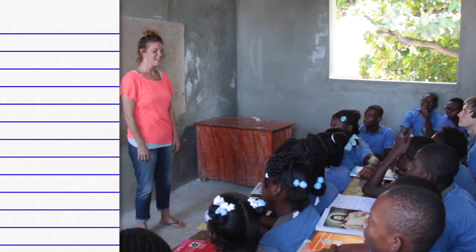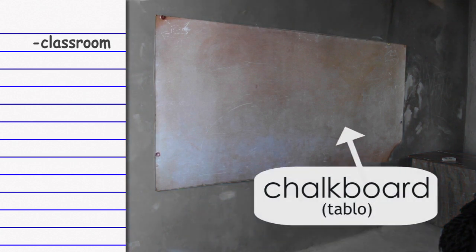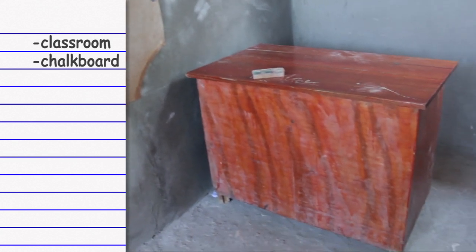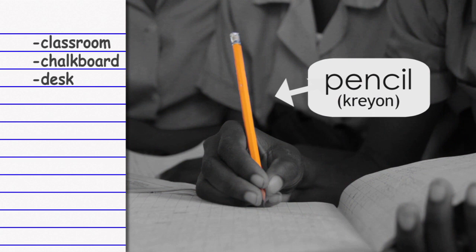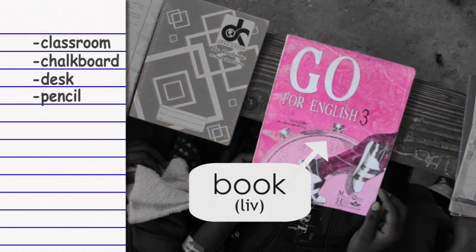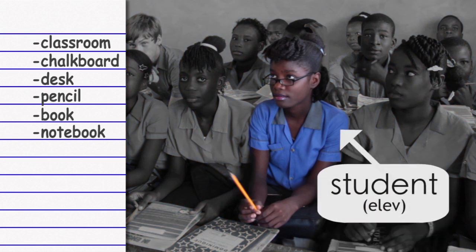Good morning students and class number 82. Good morning teacher! Classroom. Chalkboard. Desk. Pencil. Book. Notebook. Student.